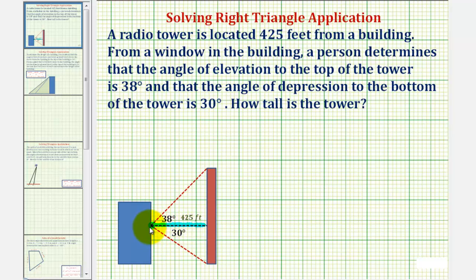This would also be the person's line of sight. Because the angle of elevation to the top of the tower is 38 degrees, this angle here would be 38 degrees. And the angle of depression to the bottom of the tower is 30 degrees, so this angle here would be 30 degrees. Notice how we have two right triangles — one above the line of sight and one below the line of sight.